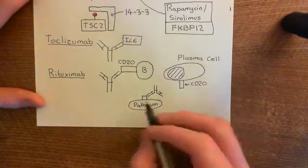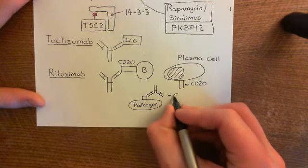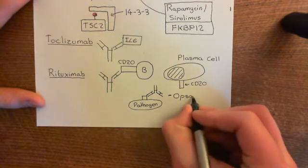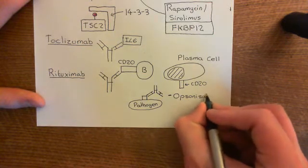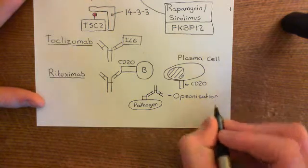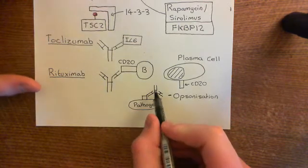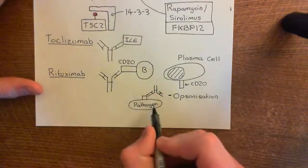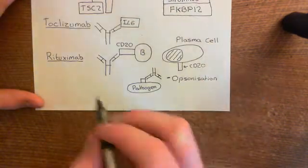There are multiple mechanisms by which it leads to destruction. One of the mechanisms is a process known as opsonization. In the process of opsonization, what happens is that if you've got an immune complex on your surface, it means that you are more likely to be phagocytosed by a phagocyte.